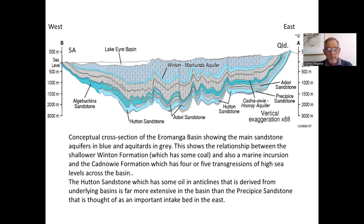It shows the relationship between the shallow Winton Formation, which has some coals, and the level of marine incursions in the Kadnawi Formation, which has four or five transgressions of high sea level across the basin. The Winton also has one of the last marine incursions. The Hutton sandstone, which has some oil and anticlinal traps derived from the underlying basins, is far more extensive in the basin than the Precipice Sandstone, usually thought of as an important intake bed in the east.